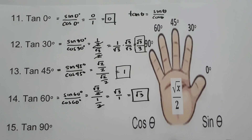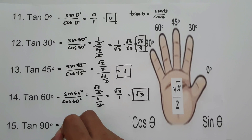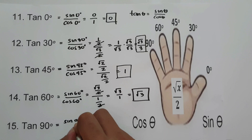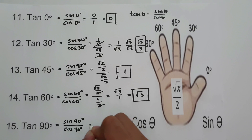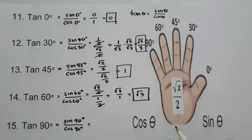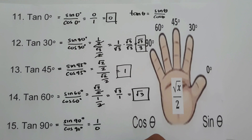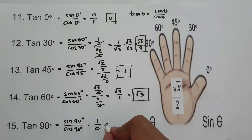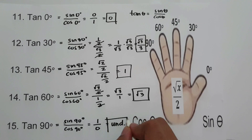For tangent 90°, that is sine 90° over cosine 90°. Sine 90° is 1, and cosine 90° is 0. So 1 divided by 0 is undefined. Tangent 90° is undefined.